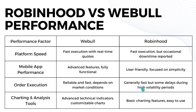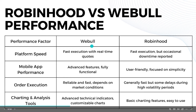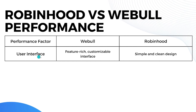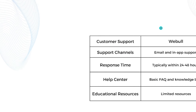For charting and analysis tools, Webull has advanced technical indicators with customizable charts, while Robinhood has basic charting features that are easy to use. For the user interface, Webull offers a feature-rich and customizable interface, while Robinhood has a very simple and clean design. That's it for the performance comparison.